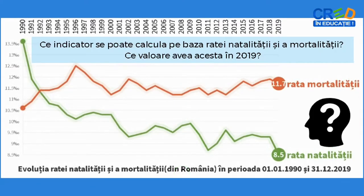Ce indicator se poate calcula pe baza ratei natalității și mortalității? Ce valoare avea acesta în 2019?